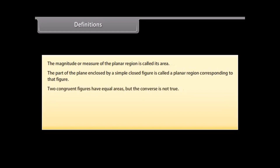Two congruent figures have equal areas, but the converse is not true. The area of a figure can also be denoted by AR. For example, area of triangle ABC can also be written as AR ABC.